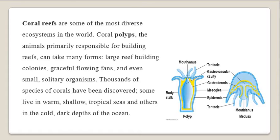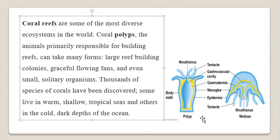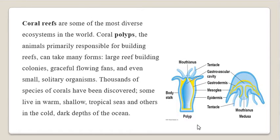Polyps belong to the phylum Cnidaria, and these cylindrically bodied animals have two main types of individuals: polyps and medusa. The medusa are the motile ones, while polyps are the sedentary ones - they get settled to the bottom. And all the coral reefs are formed by these polyps.